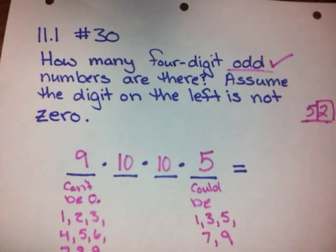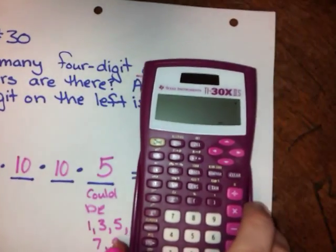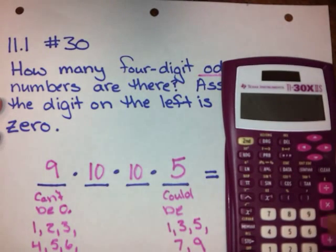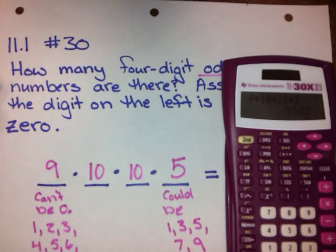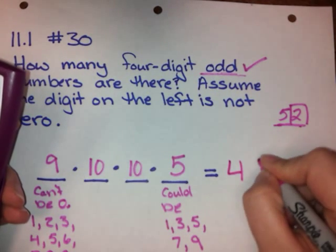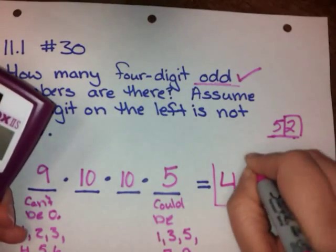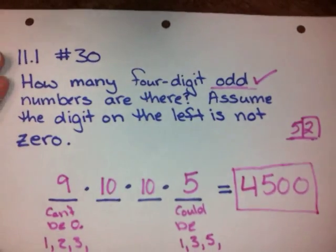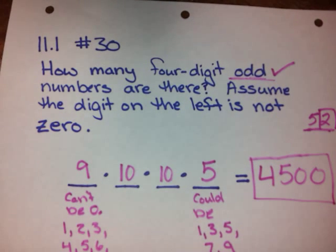Now we plug it into our calculator. We want 9 times 10 times 10 times 5, and that gives us 4,500. So that tells us there are 4,500 odd four-digit numbers where the first digit isn't a zero.